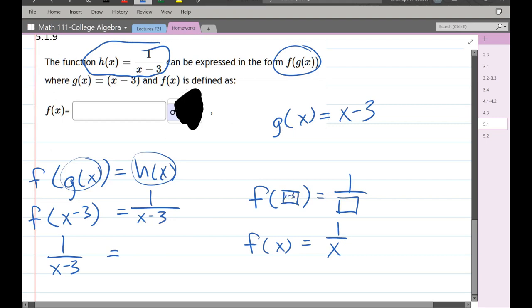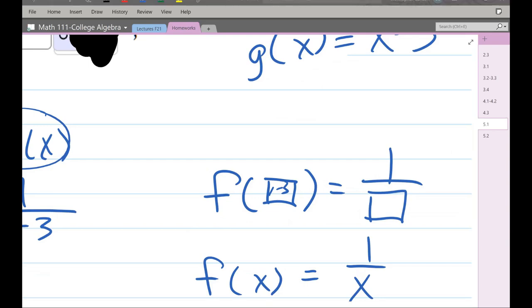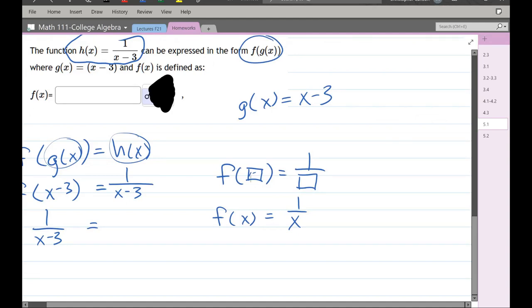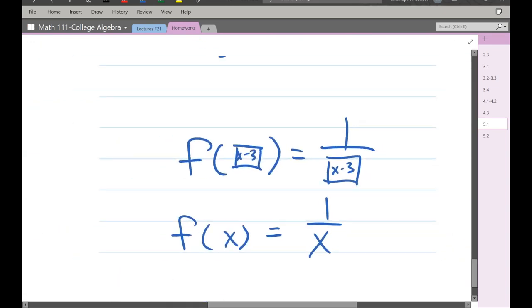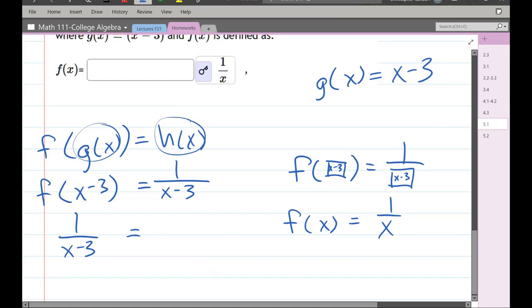I just put the x minus 3 in the box, and that's all we're doing here. So our f(x) function is 1 over x.